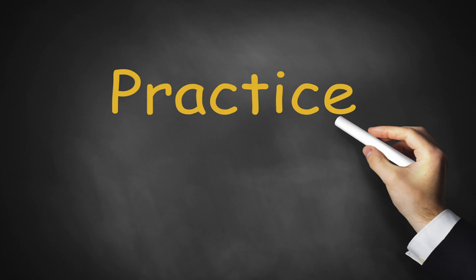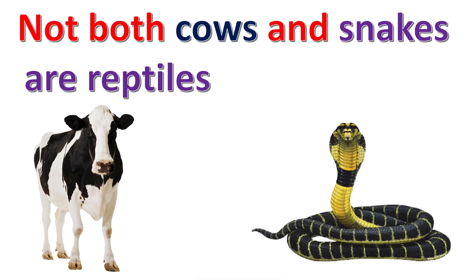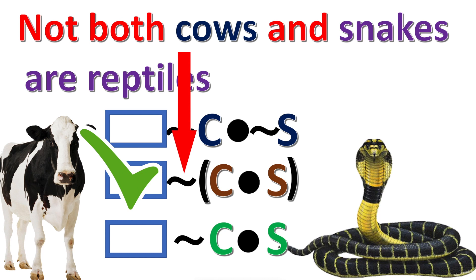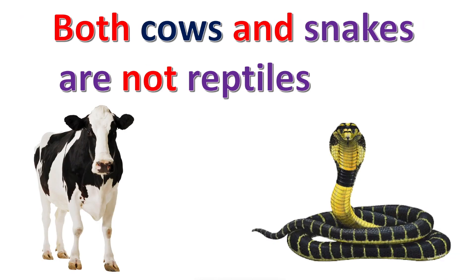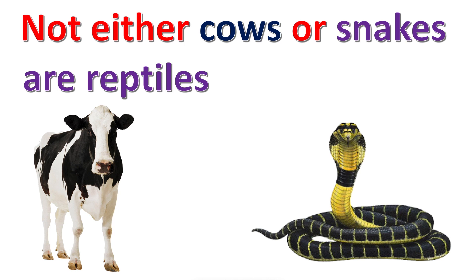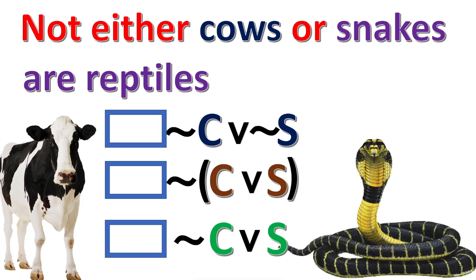Let's work some practice problems. Choose the correct translation for this statement. Press pause if you need more time, and the answer will appear in 3, 2, 1. The tilde goes outside the parentheses. Next practice problem — choose the correct translation. Press pause if you need more time, the answer in 3, 2, 1. This is the correct translation. Next practice problem — choose the correct translation. Press pause if you need more time, the answer in 3, 2, 1.